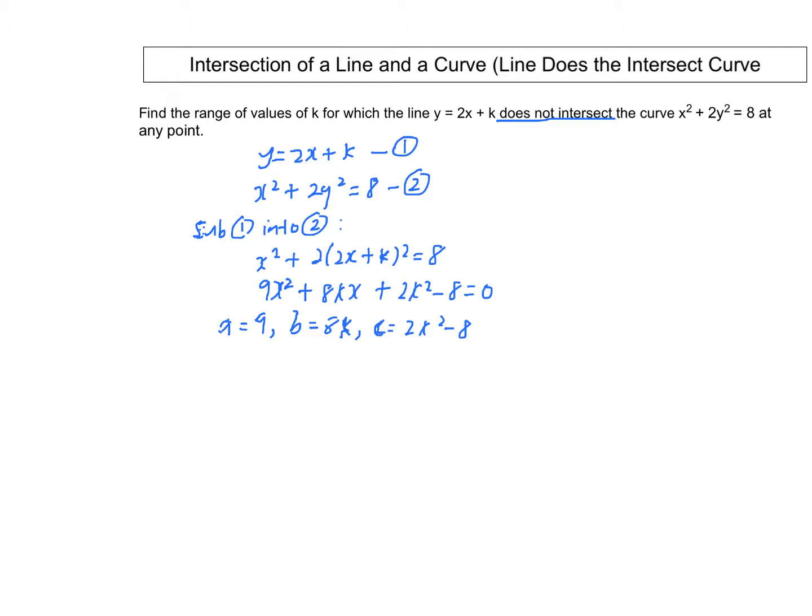Now, when the line does not intersect the curve, that means b² - 4ac must be less than 0.